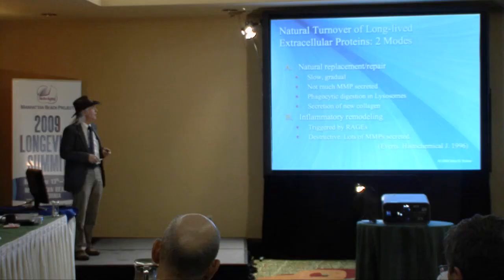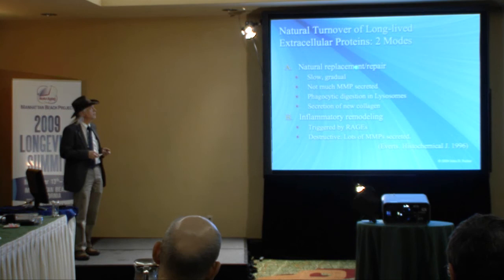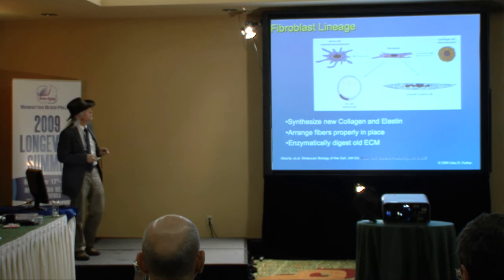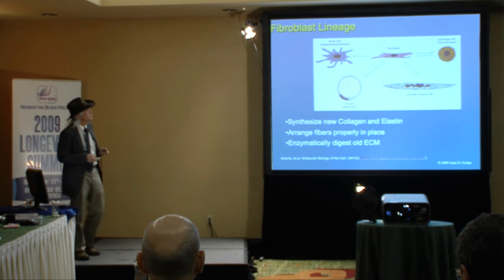We want to enhance the natural replacement and repair pathway. Fibroblast-related cells — including fat cells, smooth muscle, cartilage, and bone cells — have the ability to create new fibers and arrange them properly in place. When fibers aren't arranged properly, you get scar tissue, and everybody knows scar tissue isn't the same as the original. We'd rather have the new stuff.